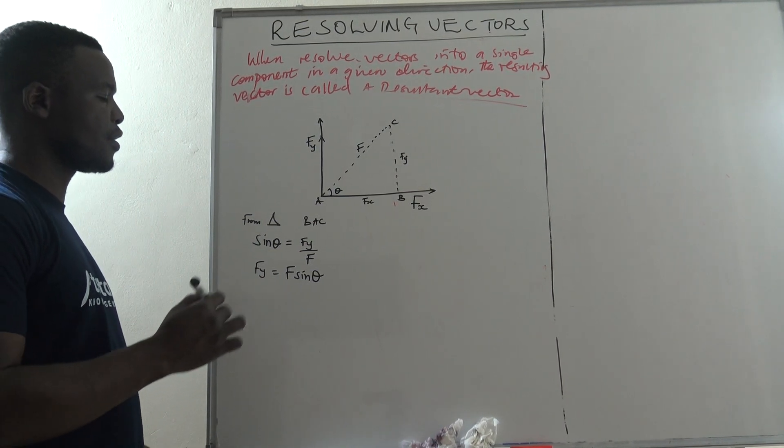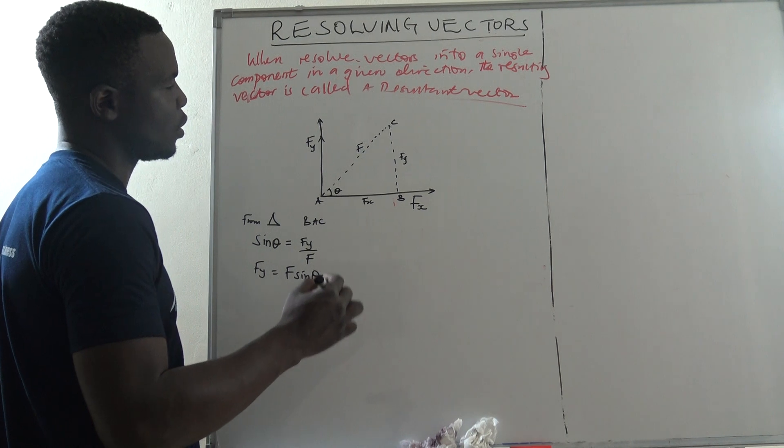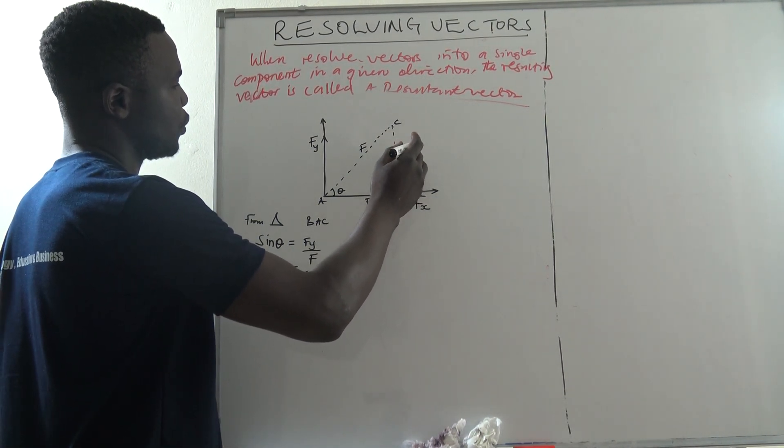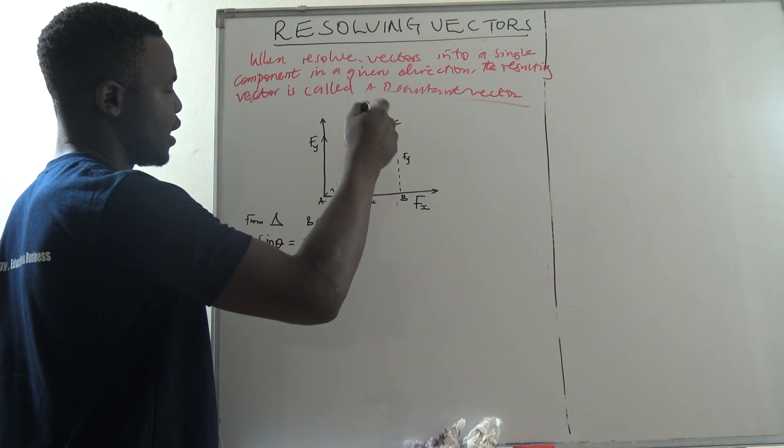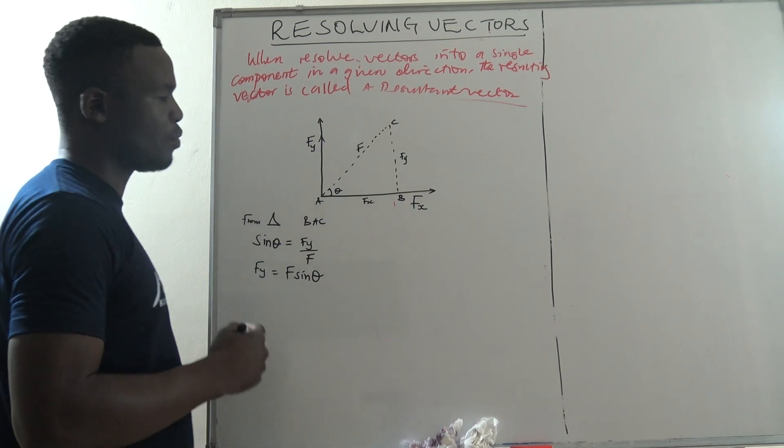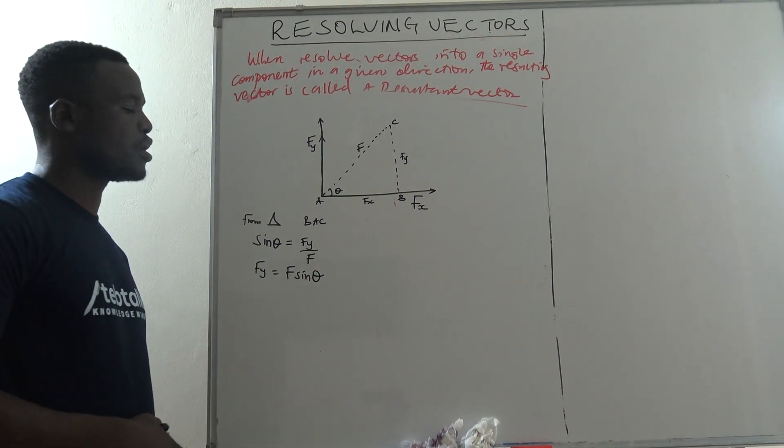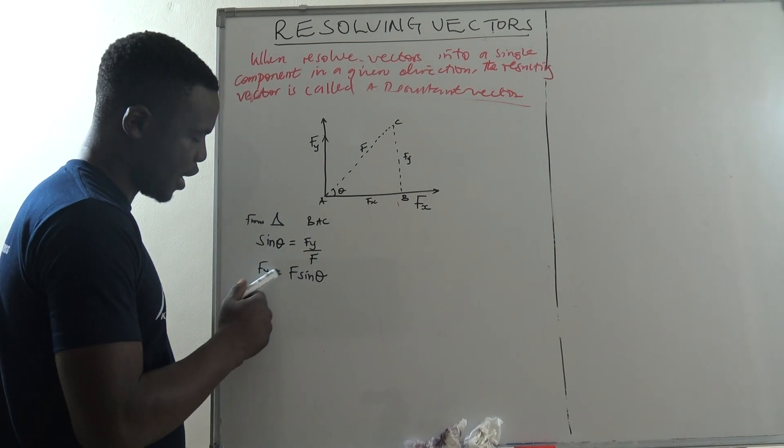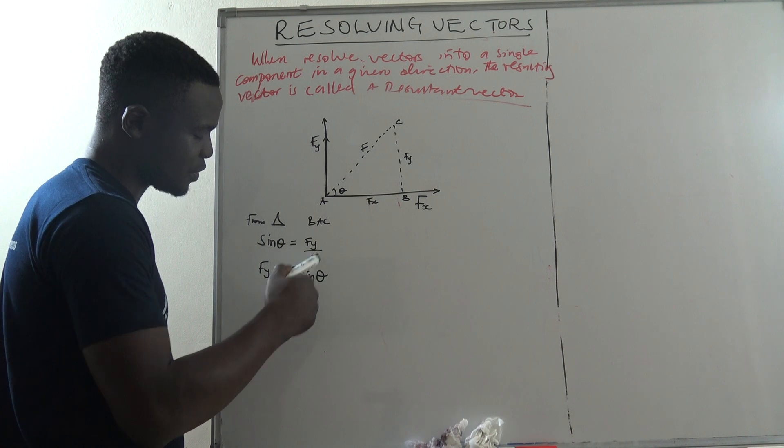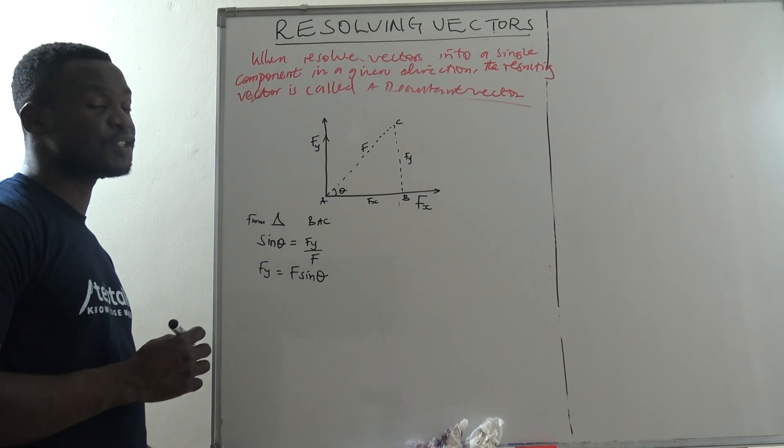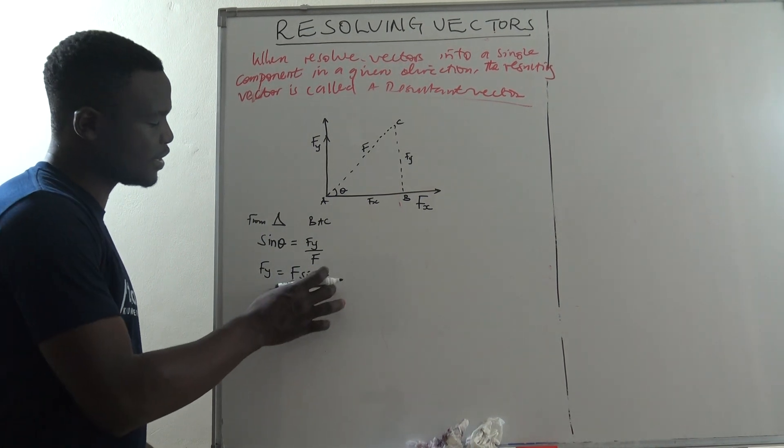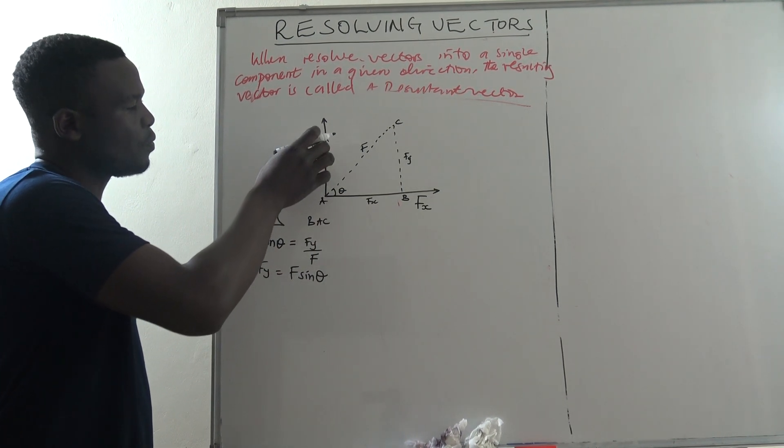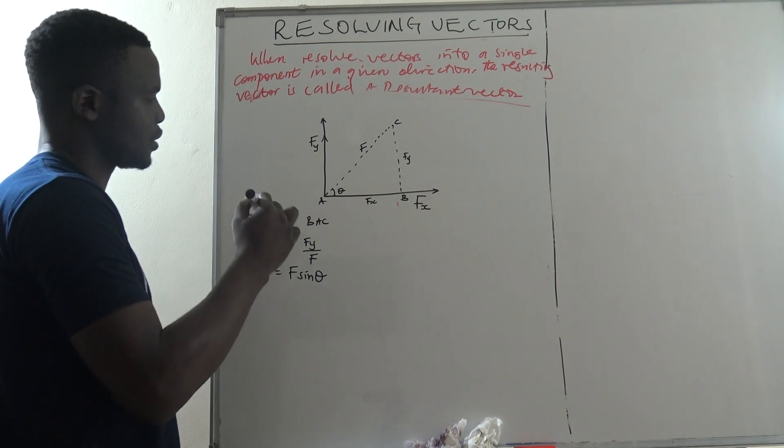When we are resolving in the vertical direction, because we said Fy is in a vertical direction, the component of the force in the vertical direction is always from F, the force, times the angle at which it is acting. That is getting the component of this force in the vertical direction.